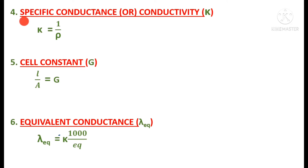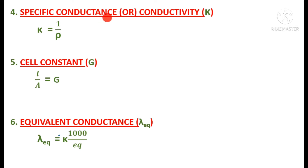Next is specific conductance, or conductivity, represented by kappa (κ). It is the conductance of one centimeter cube of an electrolytic solution. Normally, it is the reciprocal of specific resistance rho, so kappa = 1/rho.